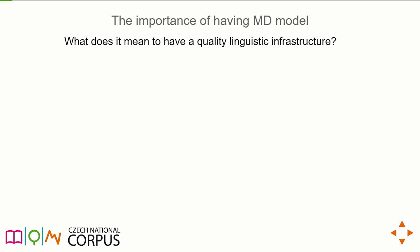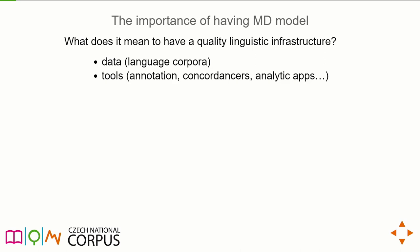To reframe it: I'm from the Institute of the Czech National Corpus, which is a language infrastructure for linguists. We provide texts, data, tools and so on. My initial question was, what makes an infrastructure good? I think it's an infrastructure that opens up new possibilities for linguistic research — not only in corpus linguistics. We need large datasets, corpora, annotation tools, concordances and analytic tools. But perhaps it would also be good to think of this infrastructure package as including something like a multidimensional model of register variation.